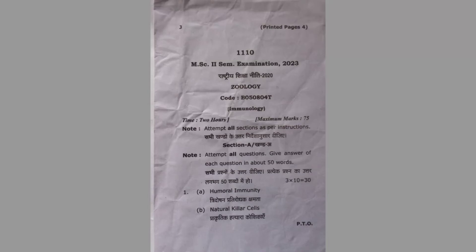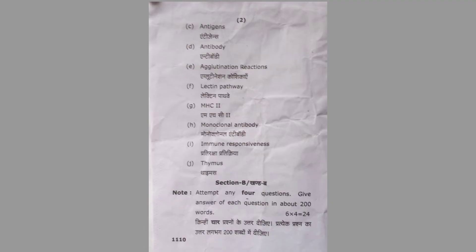MSc Second Semester Examination 2023, Subject: Zoology, Paper Fourth — Immunology. Section A, Question Number One: (a) Humoral Immunity, (b) Natural Killer Cell, (c) Antigens, (d) Antibody, (e) Agglutination Reactions, (f) Lectin Pathway, (g) MHC II, (h) Monoclonal Antibody, (i) Immune Responsiveness.